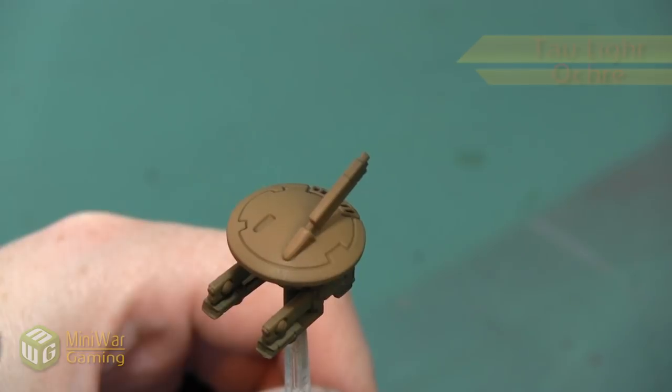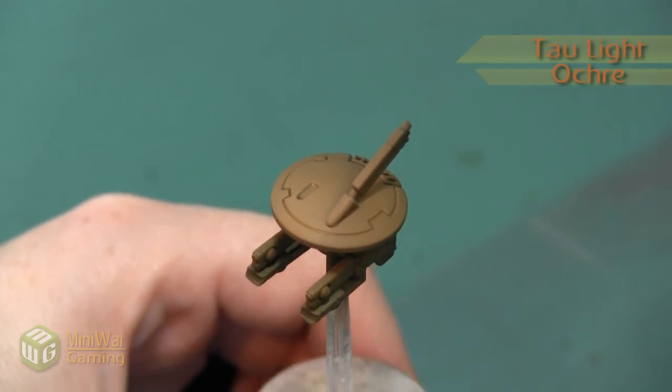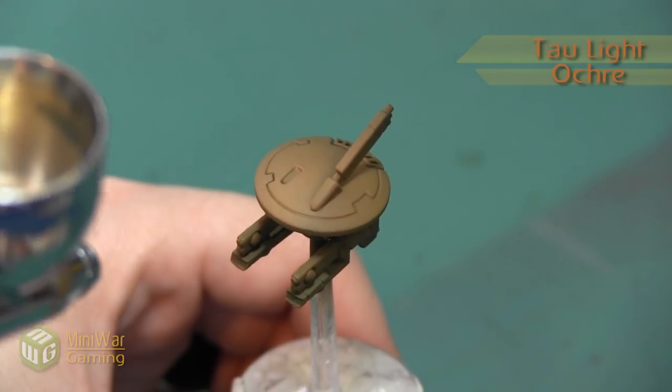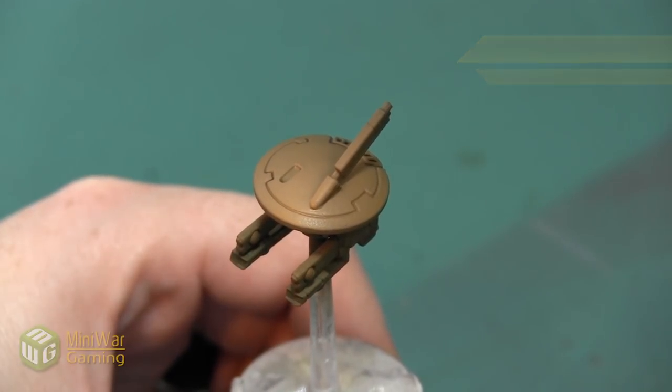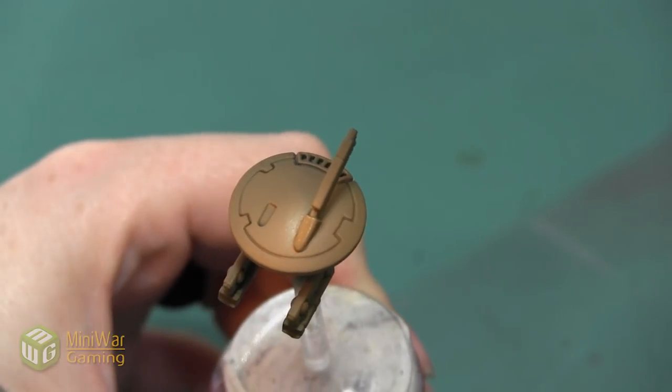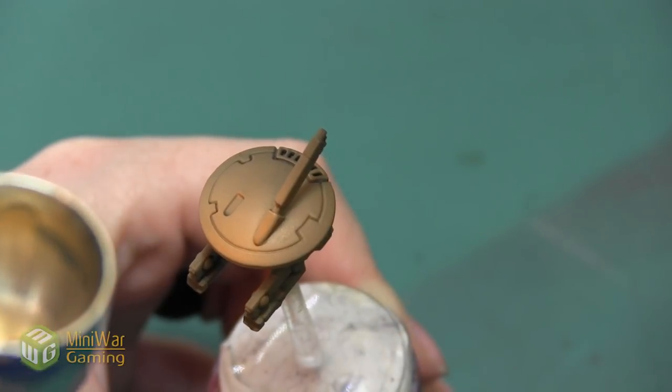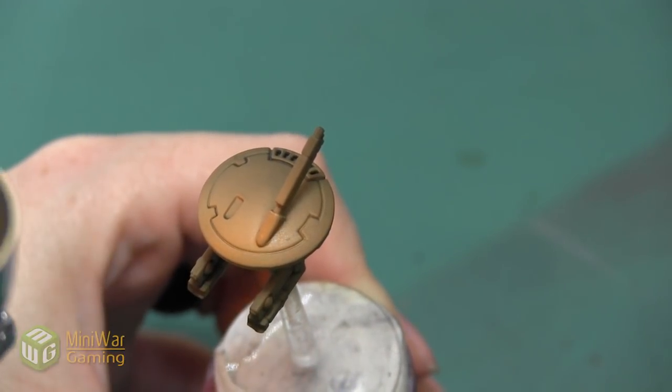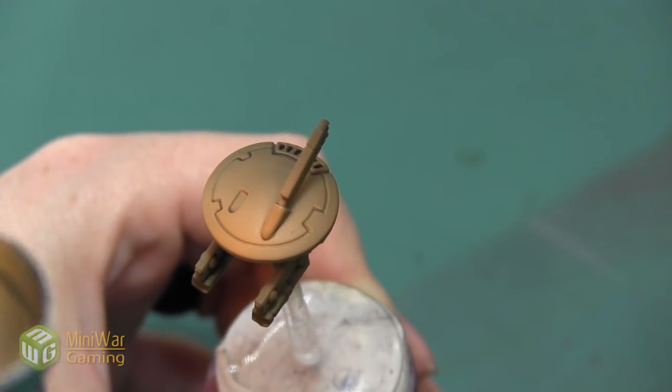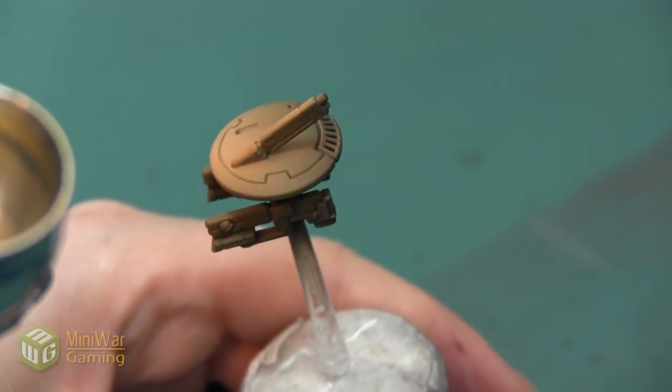After the XV-88 has been applied, our next color is going to be Tau Light Ochre. Now as I apply this I'm really just going to be spraying from the very front of the gun drone. I want the paint to reach the back, however I'm not going to apply it there directly. I'm mainly going to be applying this from one direction so that that front area is a lot lighter and less paint gets applied to the back.